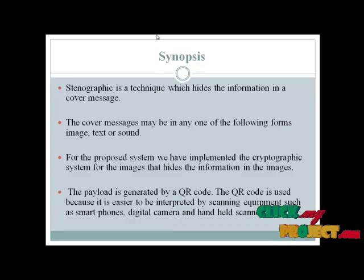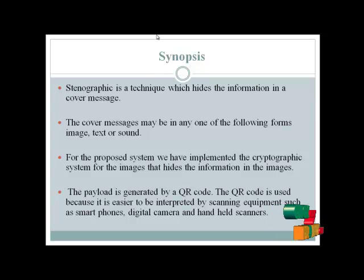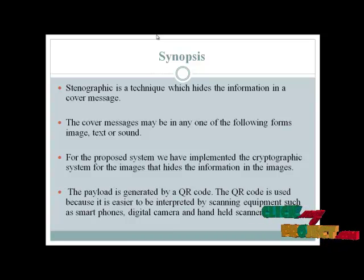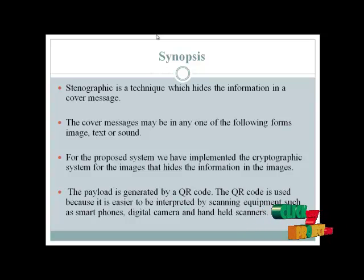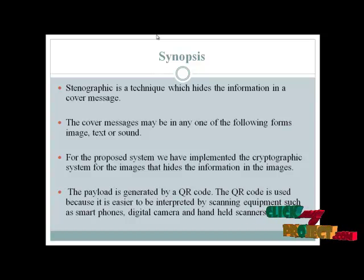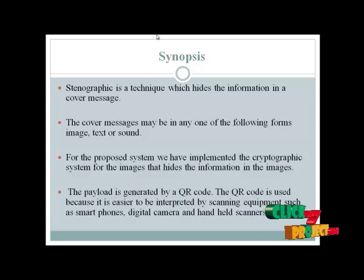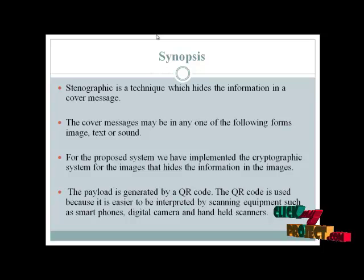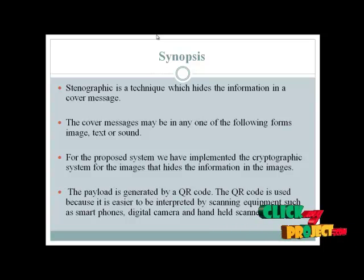The input is getting information from the gallery or camera view to capture the images. The output is a QR code. The QR code gets information either online or offline. The cryptographic techniques use the camera or gallery, heading to scanning for the information into the encoding images.